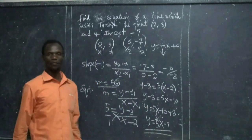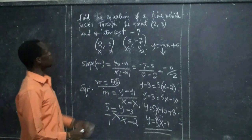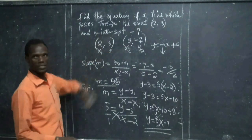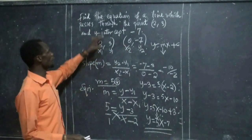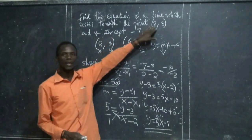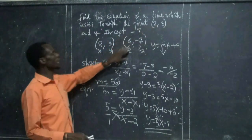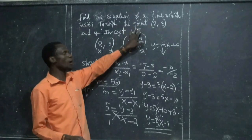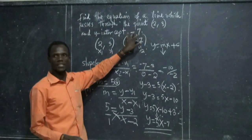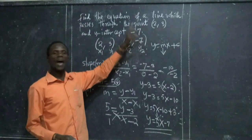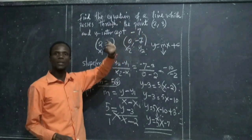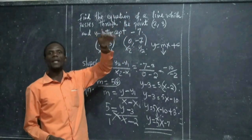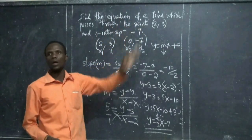You've been given the points and y-intercepts. The first point is given directly, and the second point is obtained by using the y-intercept. If you've been given x-intercepts instead, the x-intercept is obtained when y is equal to 0.